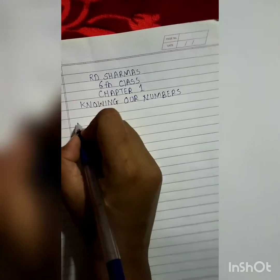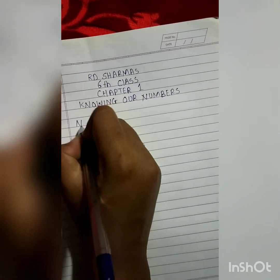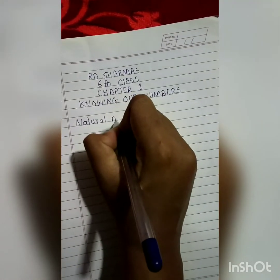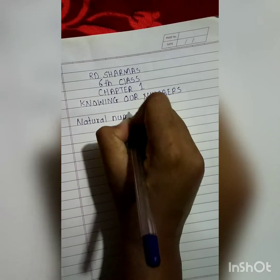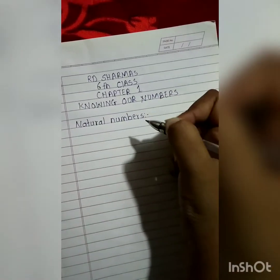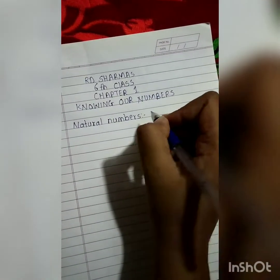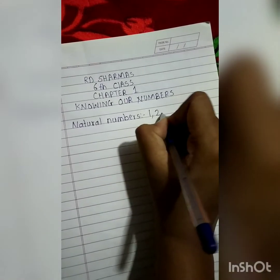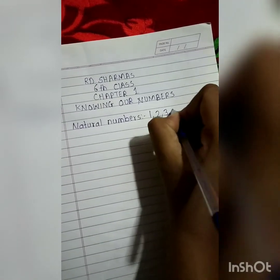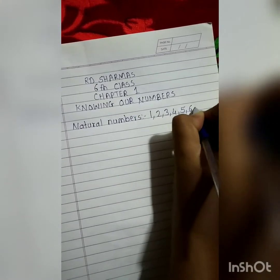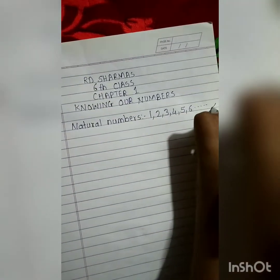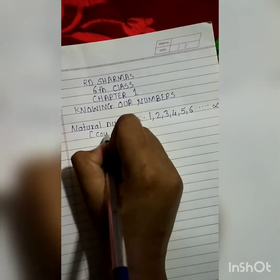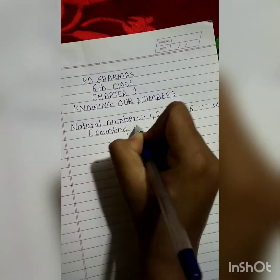First is natural numbers. Natural numbers are nothing but counting numbers. How do you count numbers? 1, 2, 3, 4, 5, 6 and so on up to infinite. So natural numbers are nothing but counting numbers.